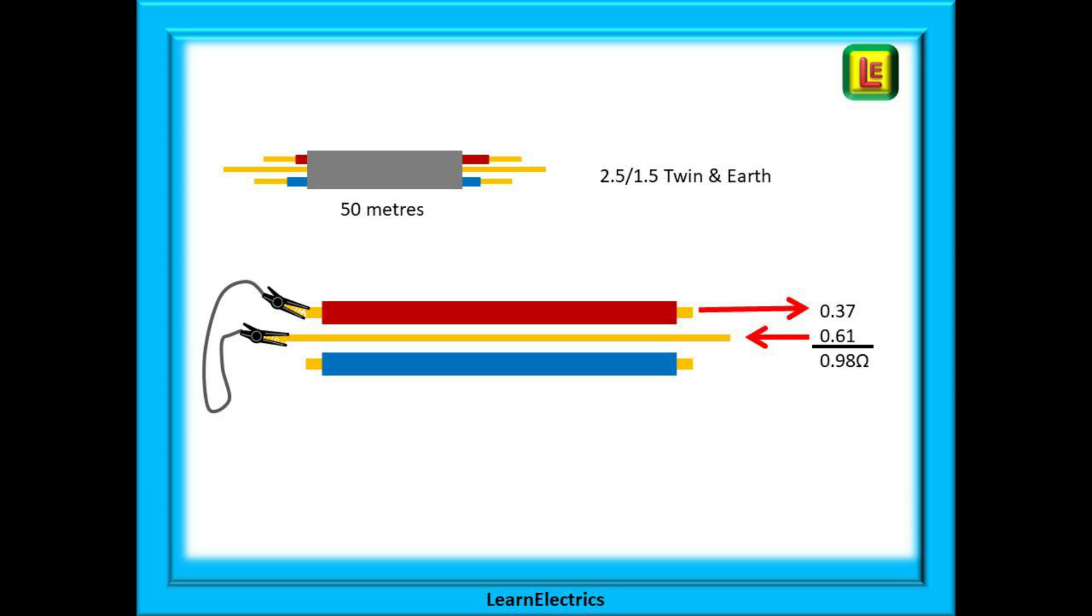Many electricians still refer to the CPC or circuit protective conductor as the earth conductor. So with the phase and CPC connected together, we can test with our meter and send a test voltage along the CPC through the link at the far end and back along the phase wire.